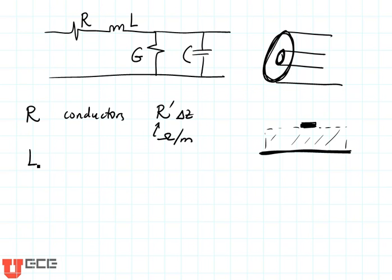And then L is the inductance. L is also L prime times delta Z, and that is given in Henrys per meter. And that is the inductance within this transmission line itself.